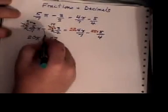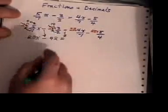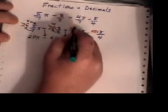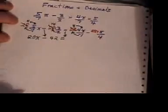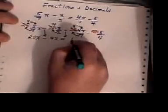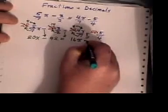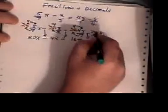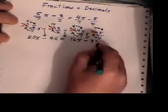This minus sign just drops down like that. Now I bump into the equal sign and I keep going. 7 into 28 is 4. 4 times 4x is 16x. Bring the minus sign down. 4 into 28 is 7. 7 times 5 is 35.